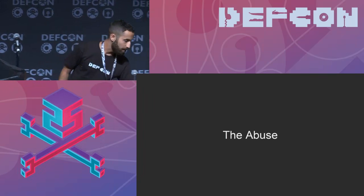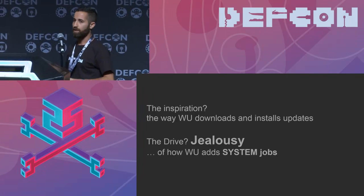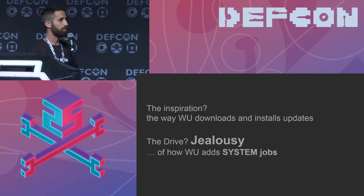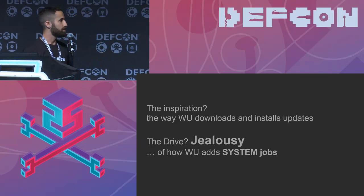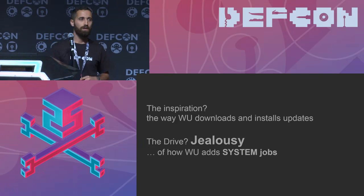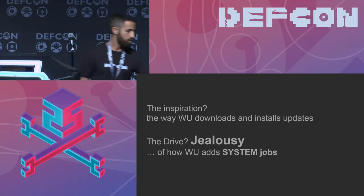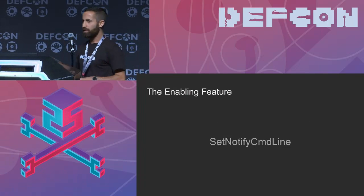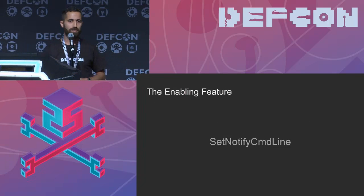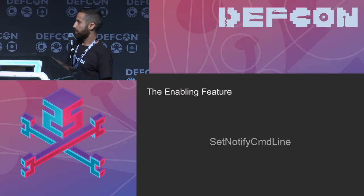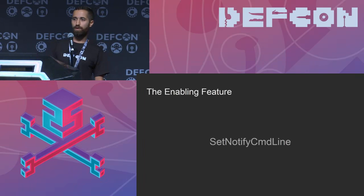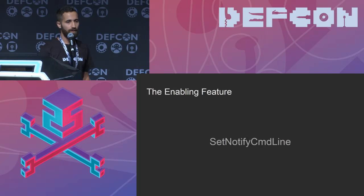So what is the real abuse we are doing? I started by looking at how different programs are using BITS. I was very jealous of how Windows Update Service uses BITS to download updates and then execute them as the system. The enabling feature behind this is the notification command line callback I previously told you about. What's behind it is just a call to SetNotifyCommandLine, which eventually calls CreateProcessAsUser. This is what we are taking advantage of — if the owner of the job is System, then the command line will be executed as System.